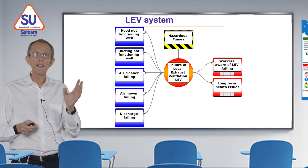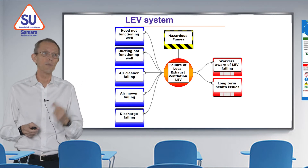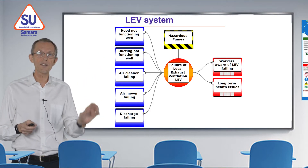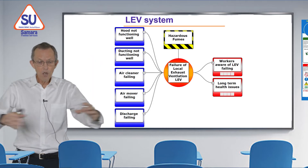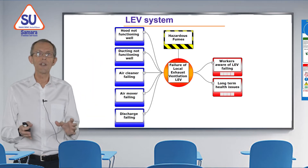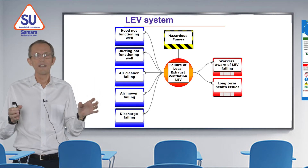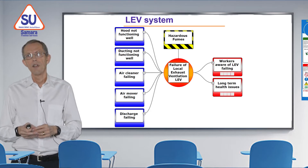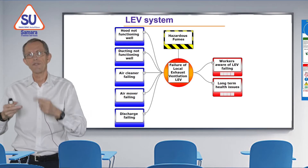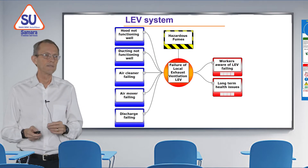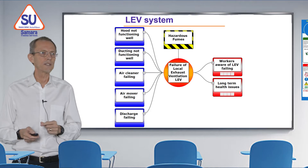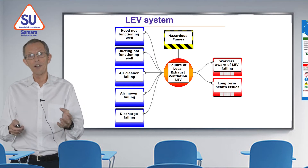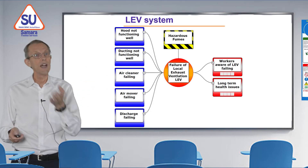Now we'll think about the threats possible for our local exhaust ventilation system, looking at each of the five parts in turn. The first is the hood — maybe the hood is not functioning well. The ducting may not be working well. The air cleaner may be failing. The air mover may be failing. Or the discharge may be failing and not in an appropriate place. If any of those happens, our ventilation system fails and the people depending on it will be exposed to the dust or fumes.